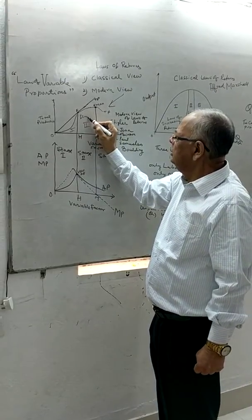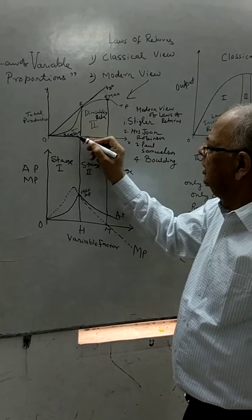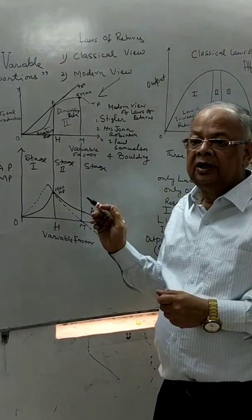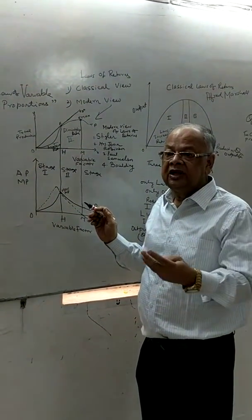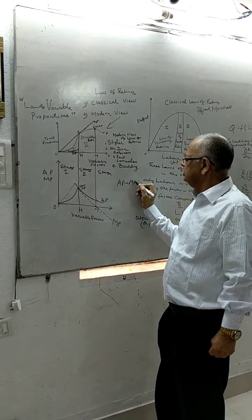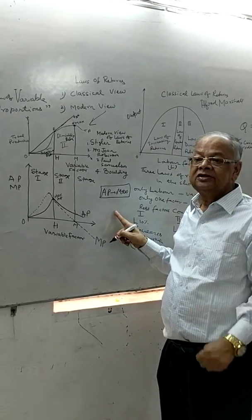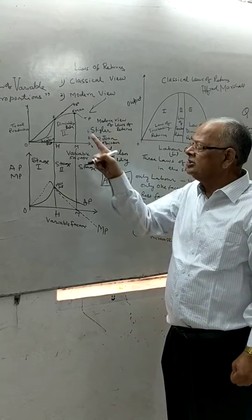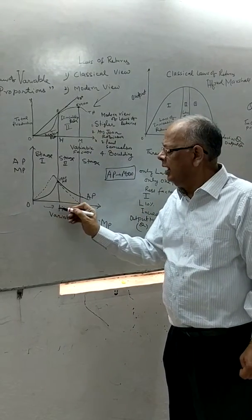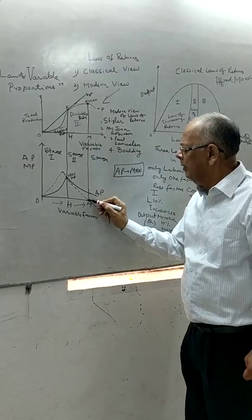In the modern view, the first stage is called increasing returns and the second is called diminishing returns. When average production is maximized, it signals the end of increasing returns and the start of diminishing returns. The producer must be conscious of this signal, but will continue to increase production and employment until marginal production is zero.